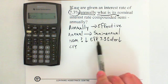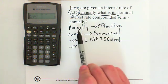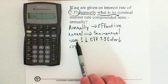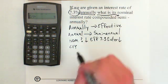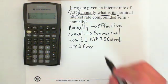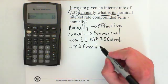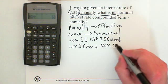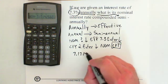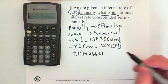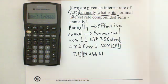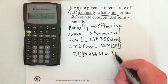Now we want to change it from effective to nominal, or annual to semi-annual. Since we typed in 7.3 for effective, and effective is annual, the CY is based on the nominal rate — and the nominal rate in this question is semi-annual. So for CY we type in 2, Enter. Then push the down arrow once, which brings us back to NOM. At NOM we push Compute, and we get 7.171426601 — rounded to two decimals, that's 7.17.